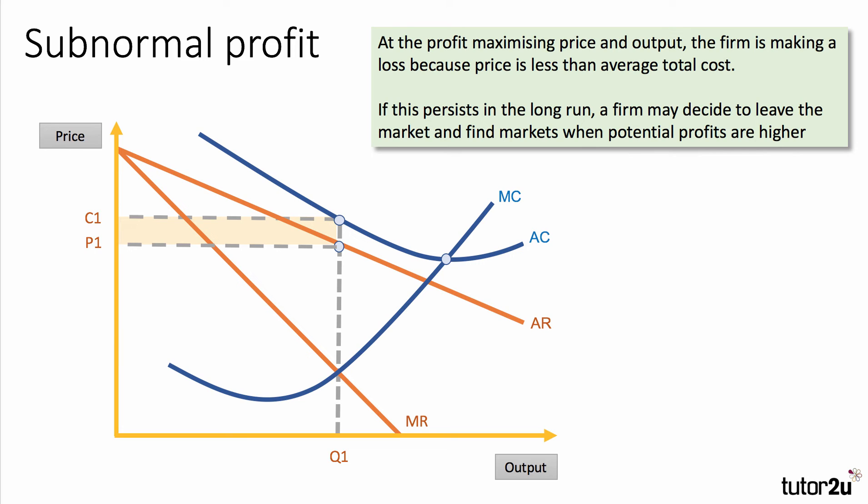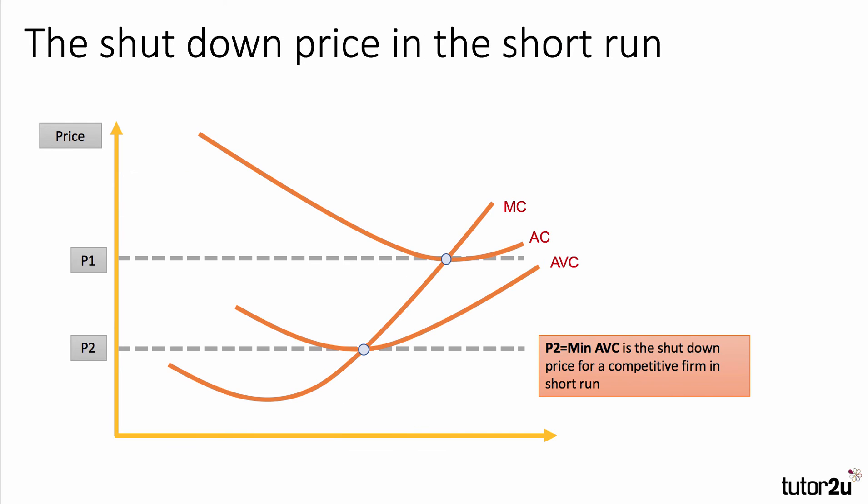The shutdown price is a particular aspect worth covering. In the short term, a business can make a loss but still carry on, providing it can still make at least normal profit in the long run. However, losses can be so high in the short term that it might be worthwhile to shut down some or all production. The shutdown point for a firm is normally where the price it can charge is at least equal to the average variable cost — so P2 in this example equals the minimum of average variable cost.